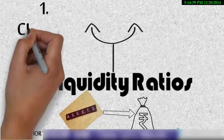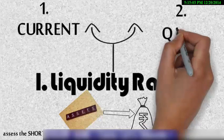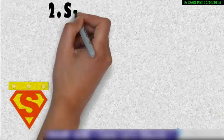Now liquidity ratio is further classified into two. The first one is the current ratio and the second is the quick ratio or liquid ratio.